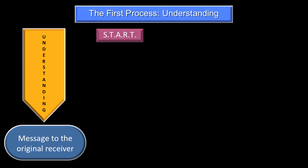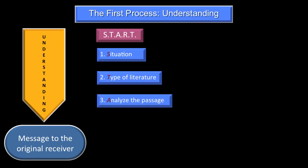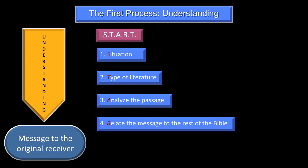We're going through the process of START, the acronym of START. The S is the situation — that's the background of the passage. Then we determine what kind of literature it is, because you cannot read prose like poetry and vice versa. Then we dig into the passage by analyzing it. When we've done that, we determine the message to the original receiver. In step four, we relate the message to the rest of the Bible. And then in step five, we test our findings to see whether we are on track or not.